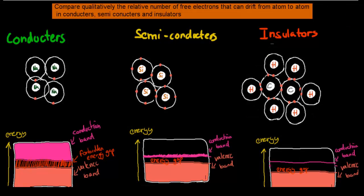This dot point is pretty much related to the last one, so we'll get straight into it to cover it as quick as possible. It says: compare qualitatively the relative number of free electrons that can drift from atom to atom in conductors, semiconductors, and insulators.